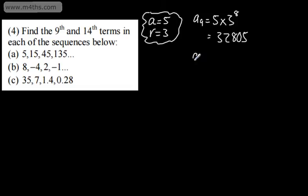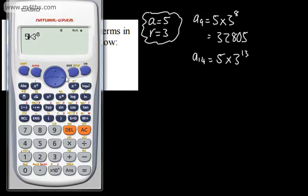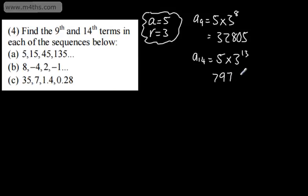If we want the 14th term, A14, we're going to have A — which is the first term — multiplied by 3 to the power of n minus 1, which is 13. All I'm going to do is change that to 13, and that will give us a value of 797,161(5). So that's now the 9th and 14th terms.